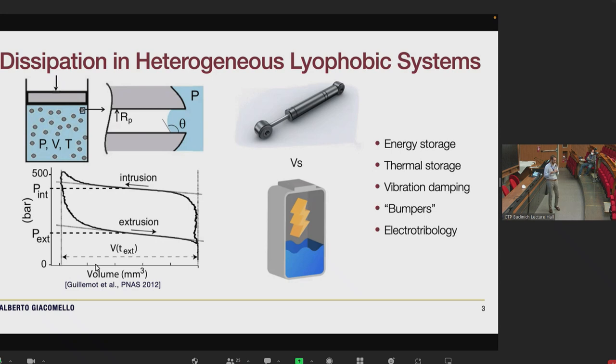Here dissipation is key because you can have an entirely different range of applications depending on how much energy you dissipate per cycle. In particular you can have vibration dampers when you have a large but repeatable cycle, single-use shock absorbers like in car bumpers when you don't have extrusion, or you can tailor your system to have intrusion-extrusion pressure very close by to minimize energy dissipation and store energy in the form of interfacial energy, taking advantage of the enormous surface area from hundreds to thousands of square meters per gram.